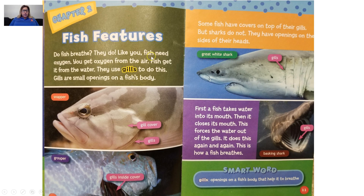They do, like you. Fish need oxygen. You get oxygen from the air; fish get it from the water. They use gills to do this. Gills are small openings on a fish's body. If you can notice, the word 'gills' stands out because it is a text feature — the word is bold. Down here in this photograph, we see there are labels. This is the gill cover, and this is the gills.